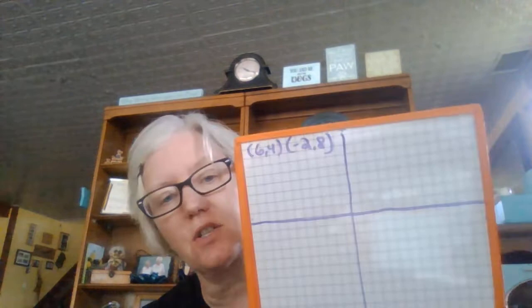What I'm doing now is strictly just to check my work when I'm done. So I'm going to go to the point (6,4), over 6, up 4: 1, 2, 3, 4, 5, 6, then 1, 2, 3, 4. And then the point (-2, 8), so left 2, up 8: 2, 3, 4, 5, 6, 7, 8.